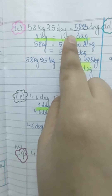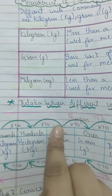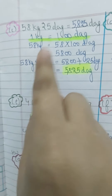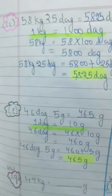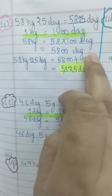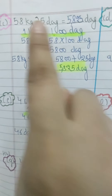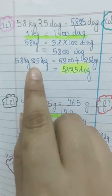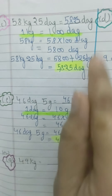Next: 58 kg 25 decagram — convert to decagram. From kilogram to decagram: kilogram → hectogram → decagram — two jumps. So 1 kg equals 100 decagram. Therefore 58 kg equals 5,800 decagram. The 25 decagram is already in decagram, so we add: 5,800 + 25 = 5,825 decagram. You can only add same units.